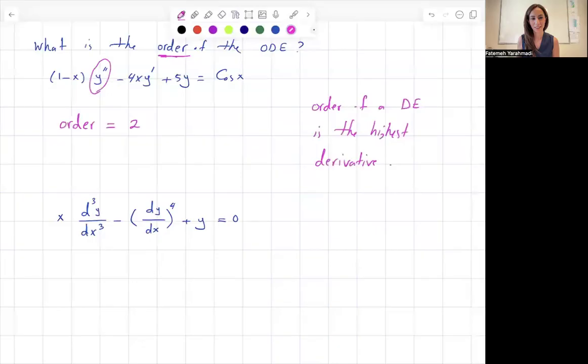The second one is a little bit tricky. You have x times the third derivative of y with respect to x minus the derivative of y with respect to x to the fourth power plus y equals 0. It's a common mistake for students to say that the order is equal to 4.